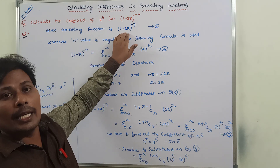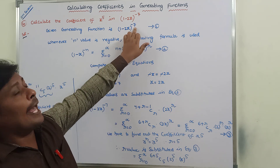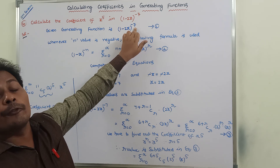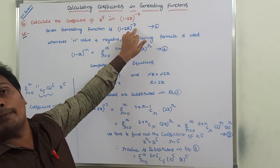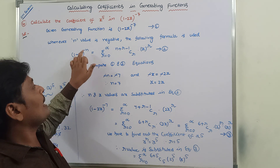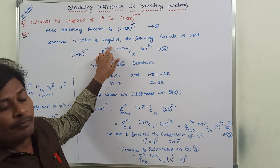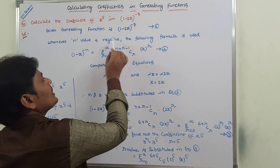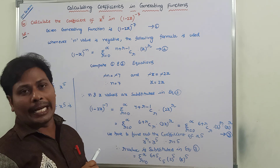The given generating function is (1 minus 2x) whole power minus 7. Whenever n value is negative, to find out the coefficient of x power 5, the following formula is used: (1 minus x) whole power minus n is equal to sigma, r is equal to 0 to infinity, (n plus r minus 1) C r, x power r. This formula is used only whenever n value is negative.